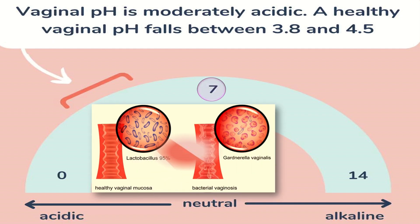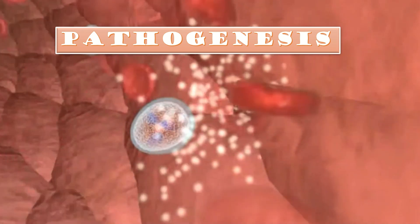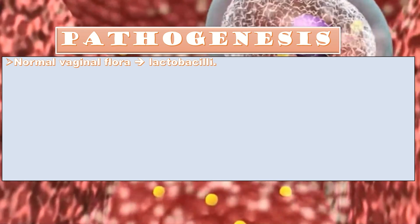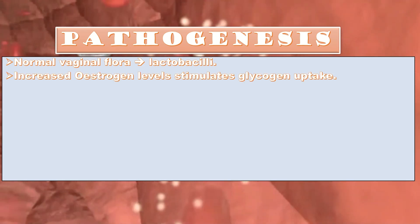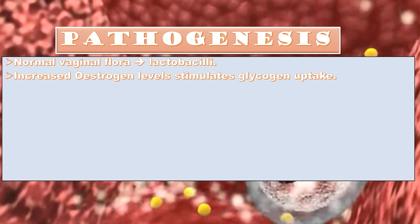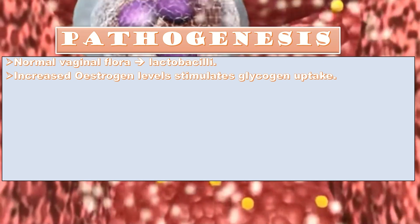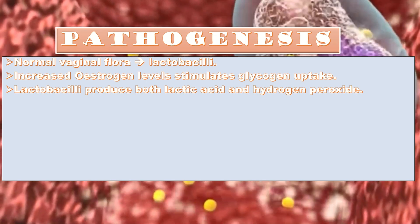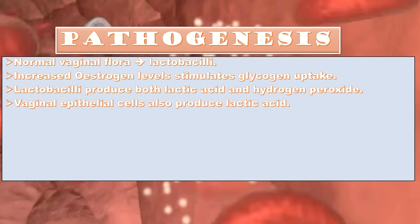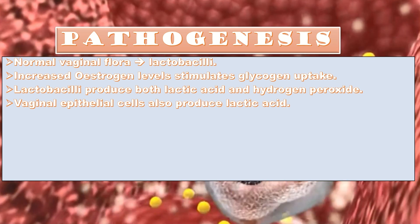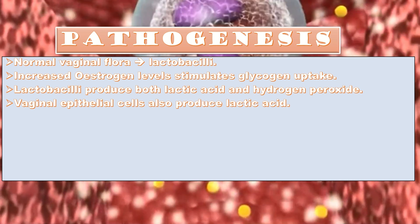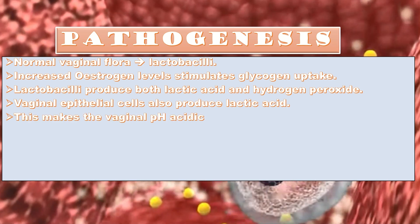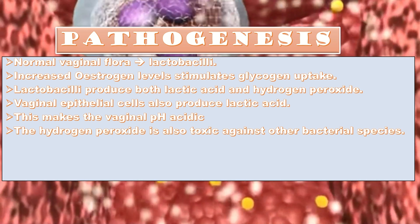When we study the pathogenesis of bacterial vaginosis, we come to know that the normal vaginal flora in women of reproductive age is predominantly lactobacilli. At puberty, estrogen levels increase, stimulating glycogen uptake by vaginal epithelial cells. Lactobacilli produce both lactic acid and hydrogen peroxide. Vaginal epithelial cells also produce lactic acid as a byproduct of glycogenolysis, making the vaginal pH acidic. Hydrogen peroxide is also toxic against other bacterial species.